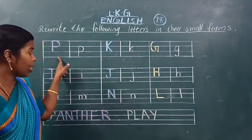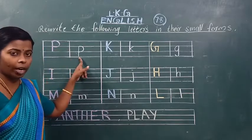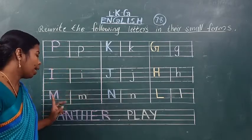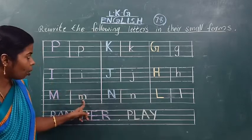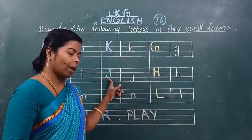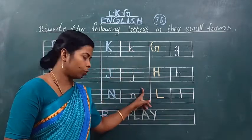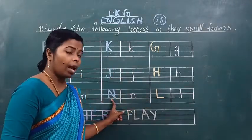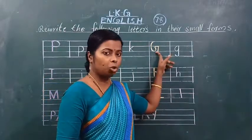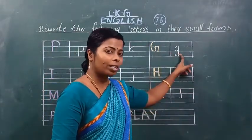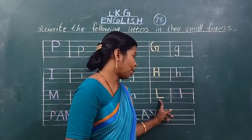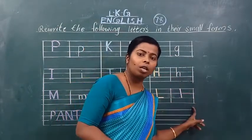This is P — capital letter P, small letter p. This is I — capital I, small i. Capital M, small m. Capital K, small k. Capital J, small j. Capital N, small n. Capital G, small g. Capital H, small h. Capital L, small l.